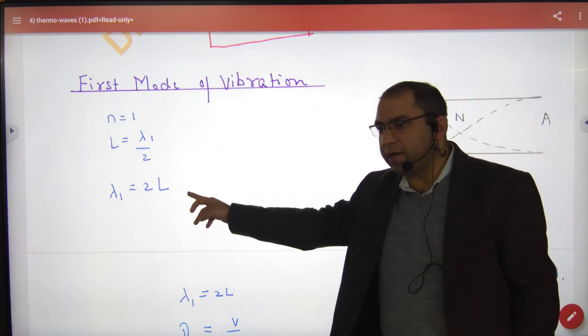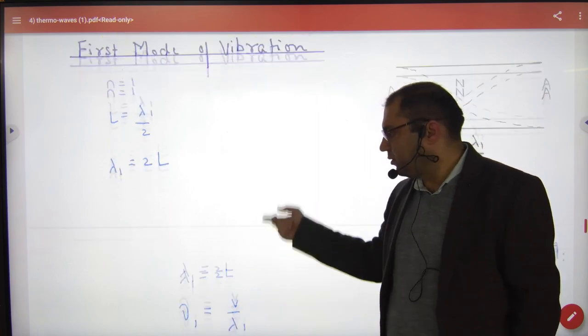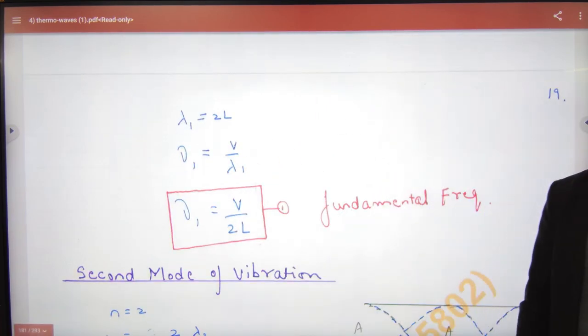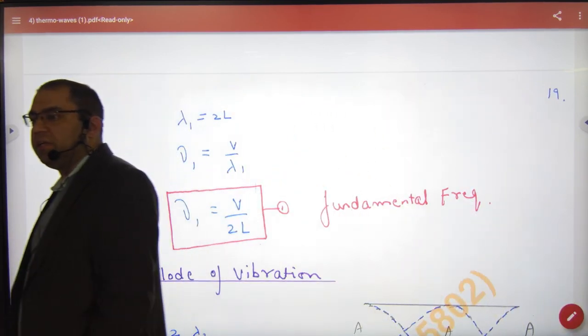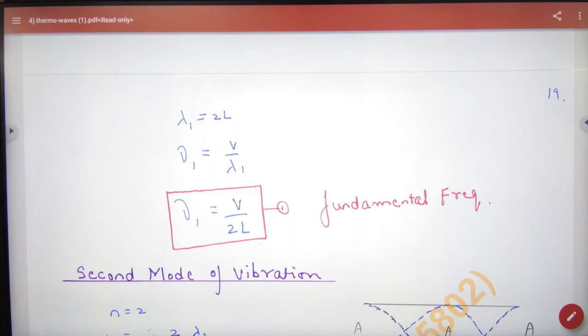So in this, cross-multiply, lambda 1 is 2L. So the first frequency is known as fundamental frequency. The formula is v by 2L. Next is,